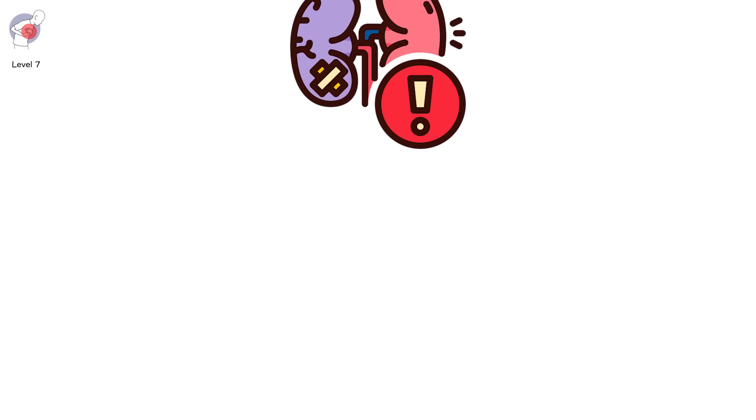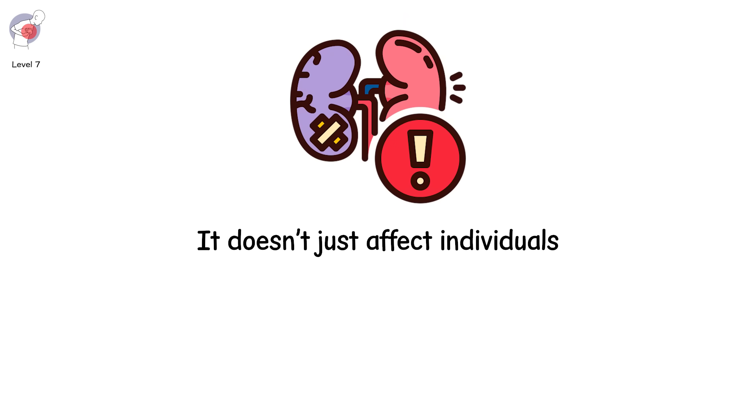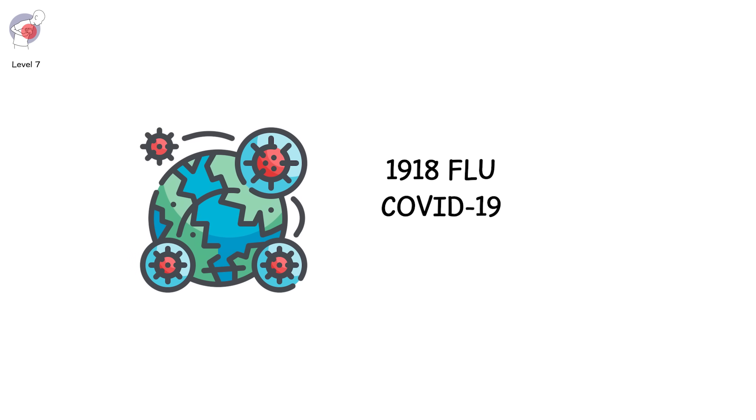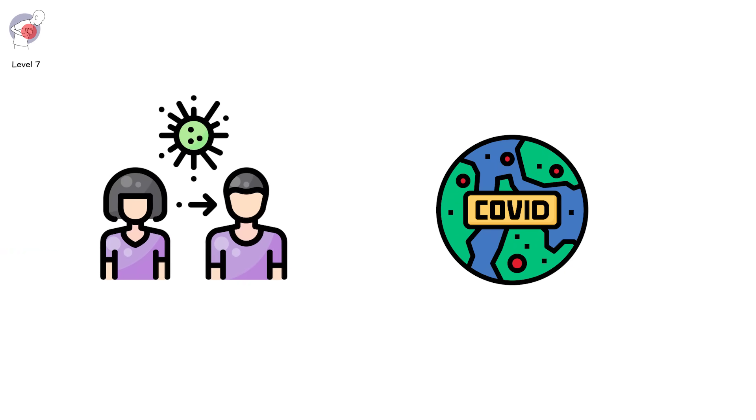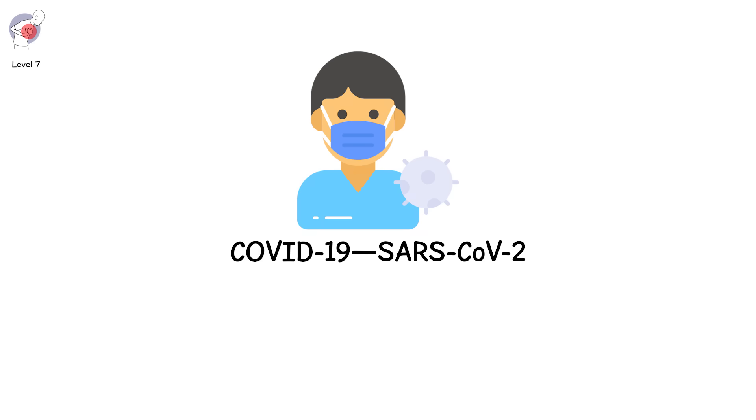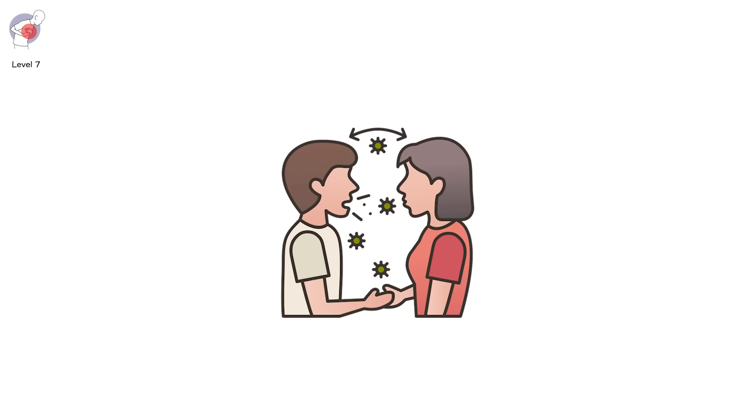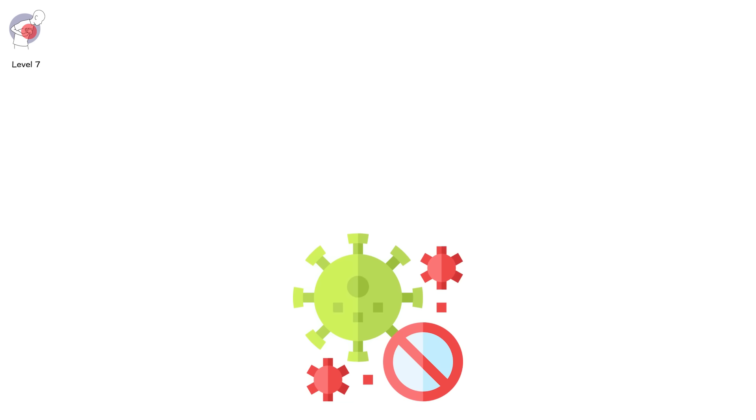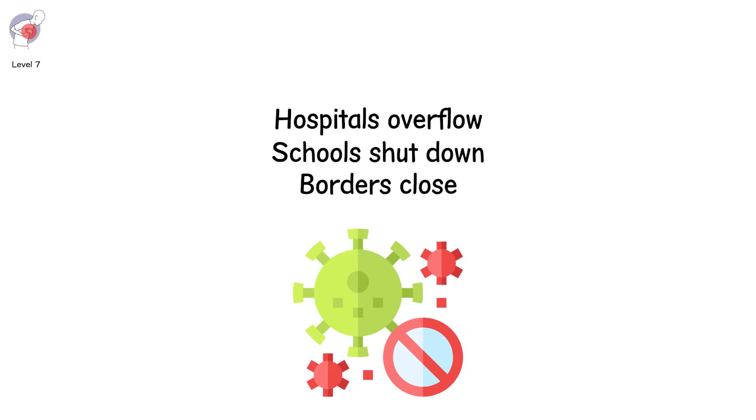Level 7. This is the level that changes the world. Because when disease hits here, it doesn't just affect individuals. It fractures societies. Let's talk about pandemics. The 1918 flu, COVID-19, SARS. These aren't just infections. They're events. Historic rewirings of economies, institutions, and how humans interact. Take COVID-19, SARS-CoV-2, a virus so small it fits inside a droplet. Yet it disrupted 8 billion lives. At this level, disease becomes social, political, economic. Borders close. Schools shut down. Hospitals overflow. Supply chains buckle. Funerals become video calls.